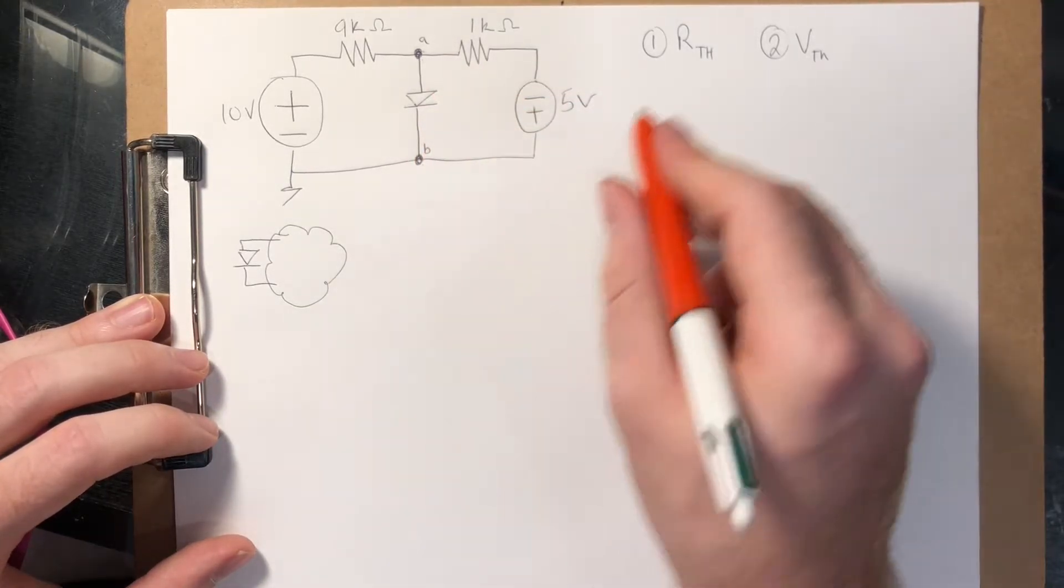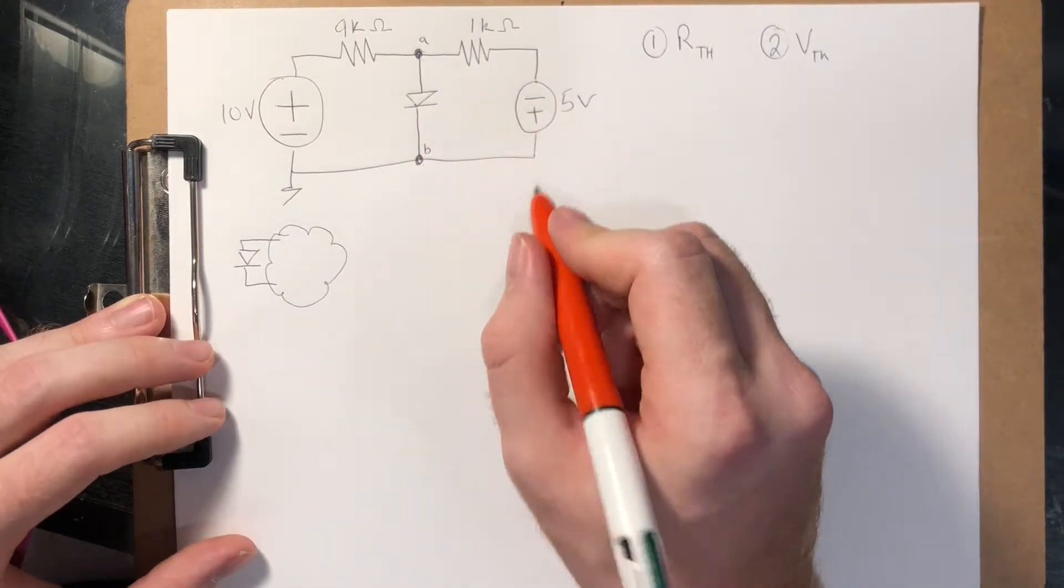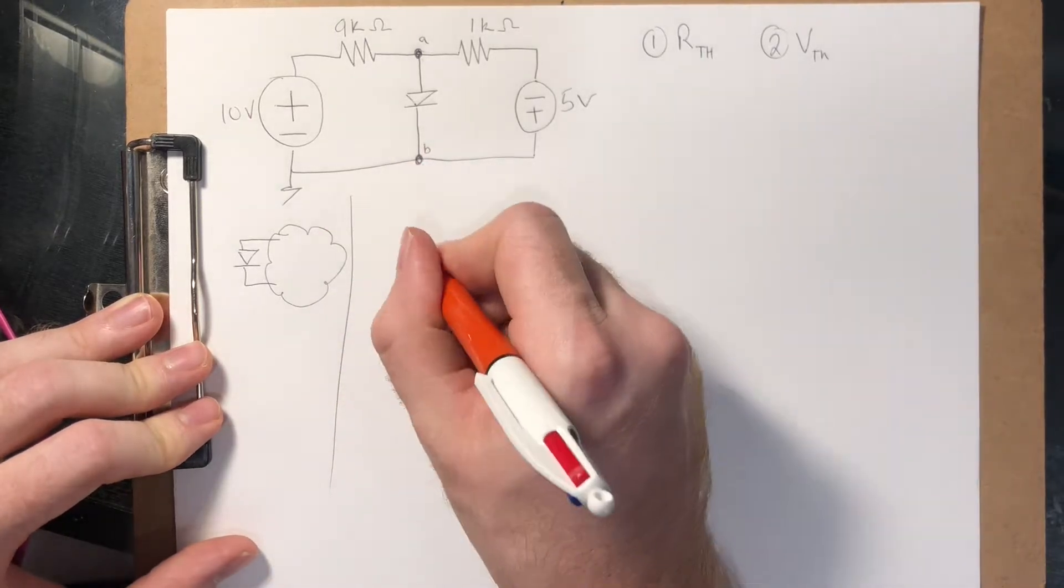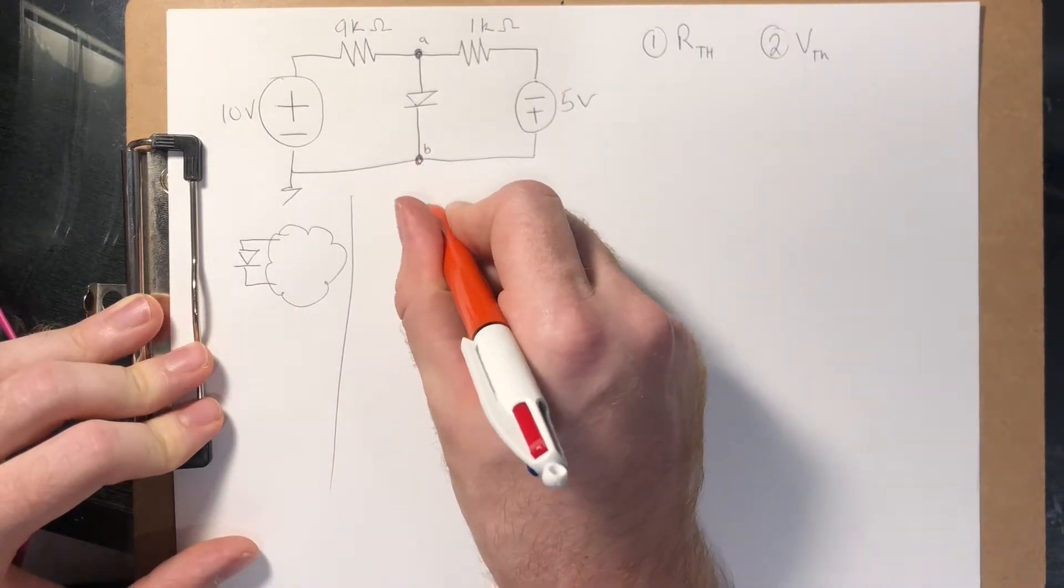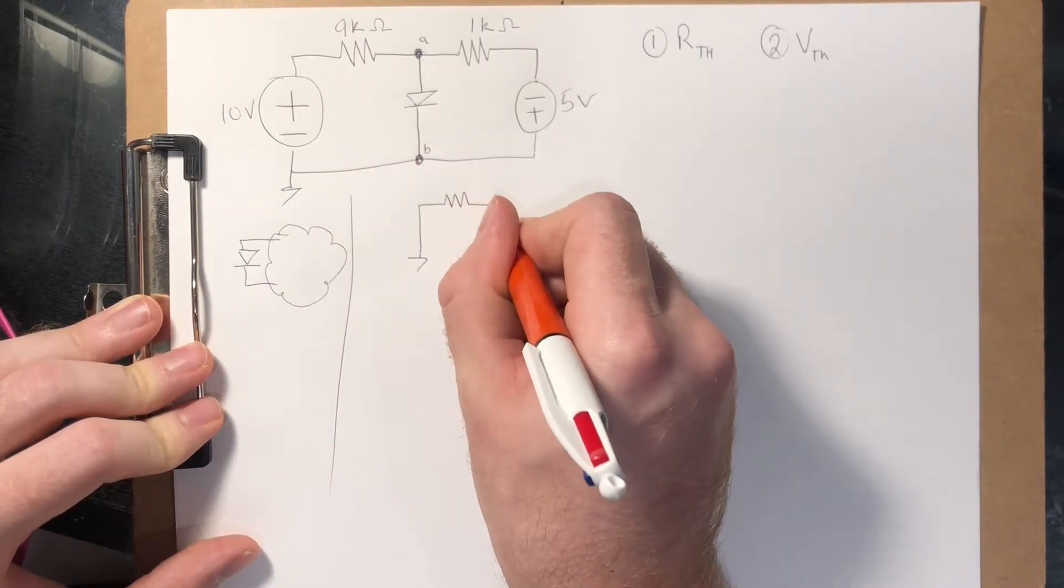So the first thing, we're going to find R Thevenin, which means we short out all the voltage sources, which means we'll have just this.